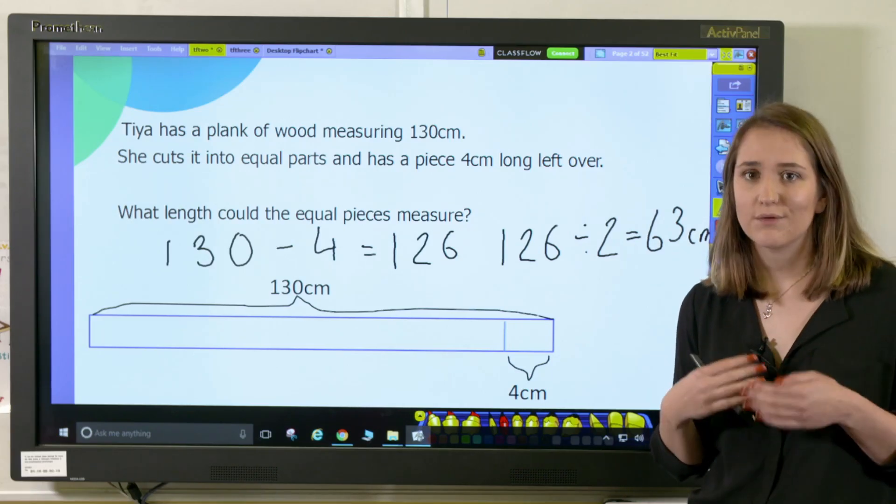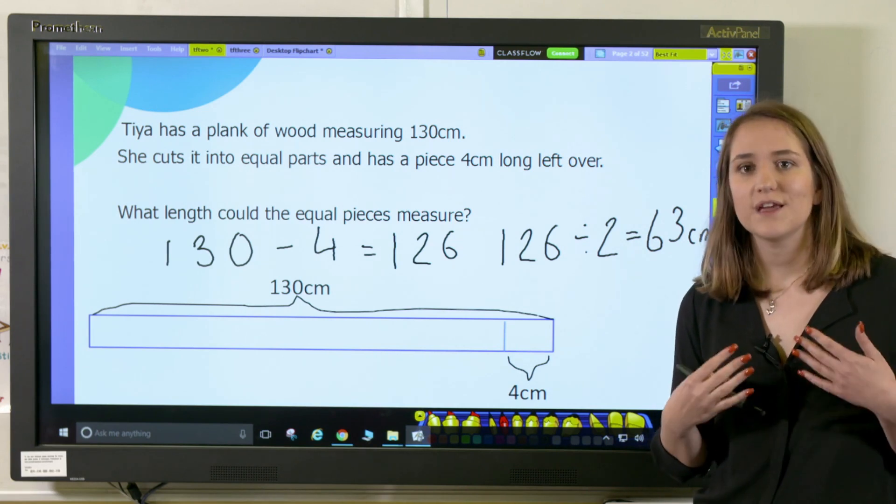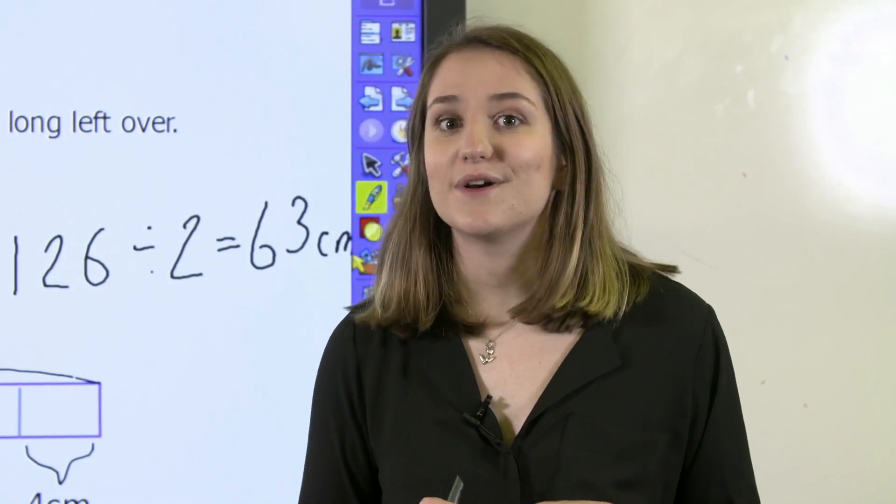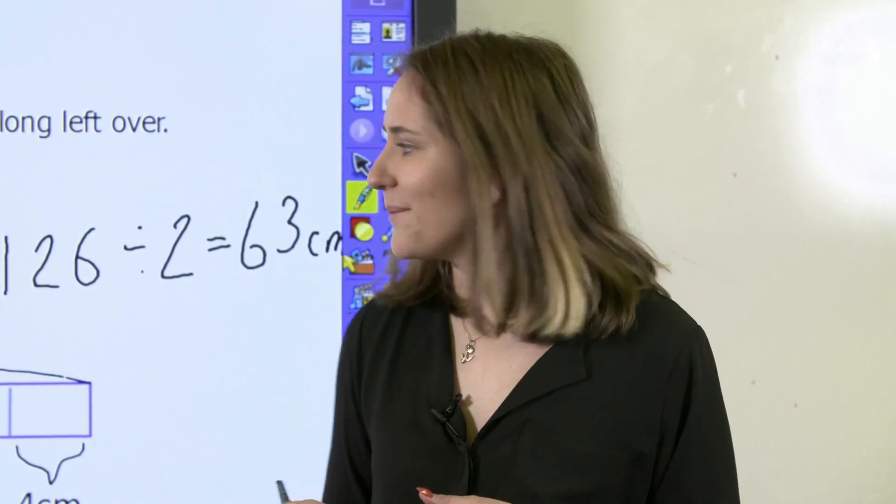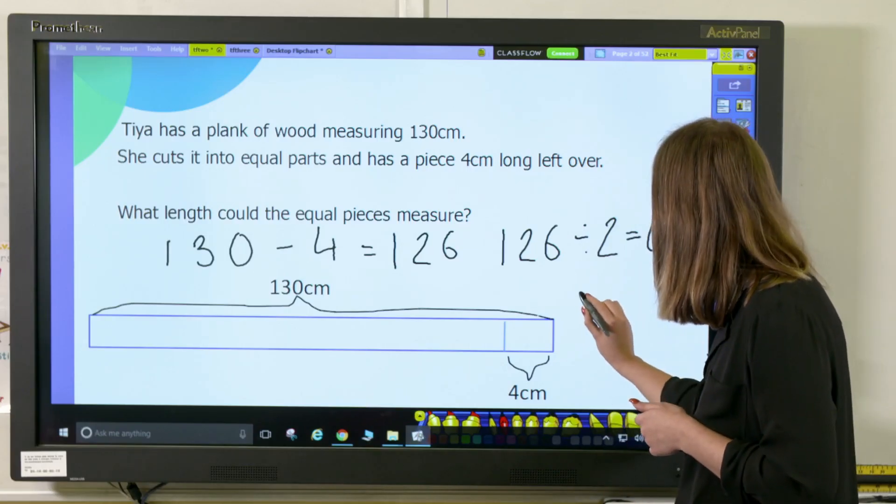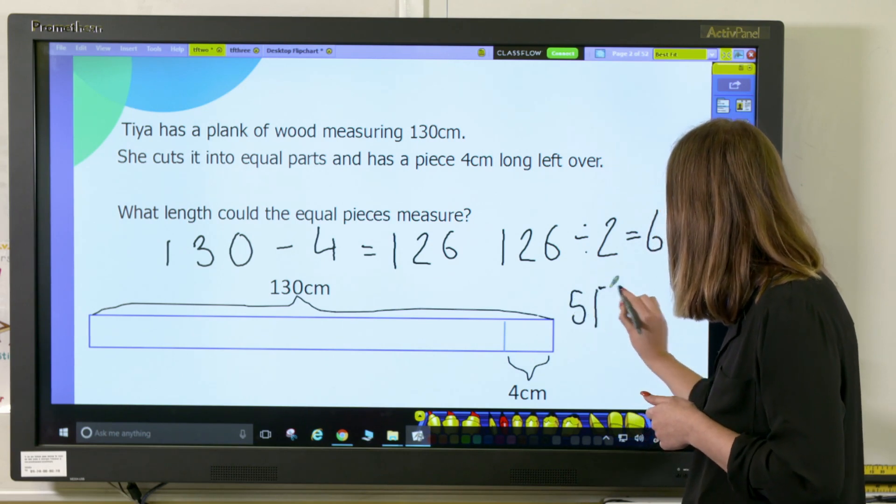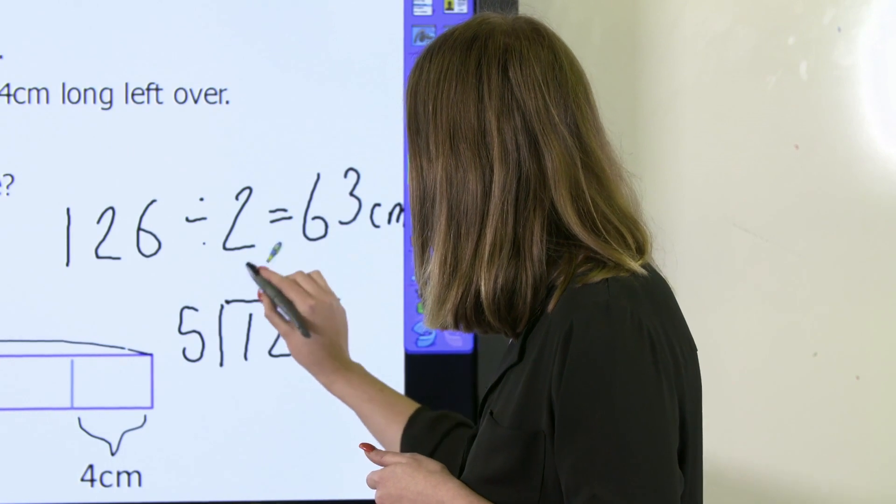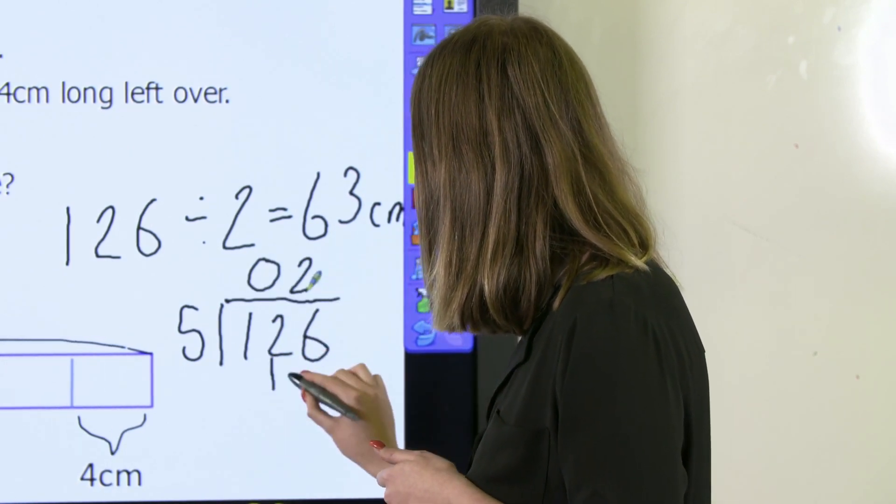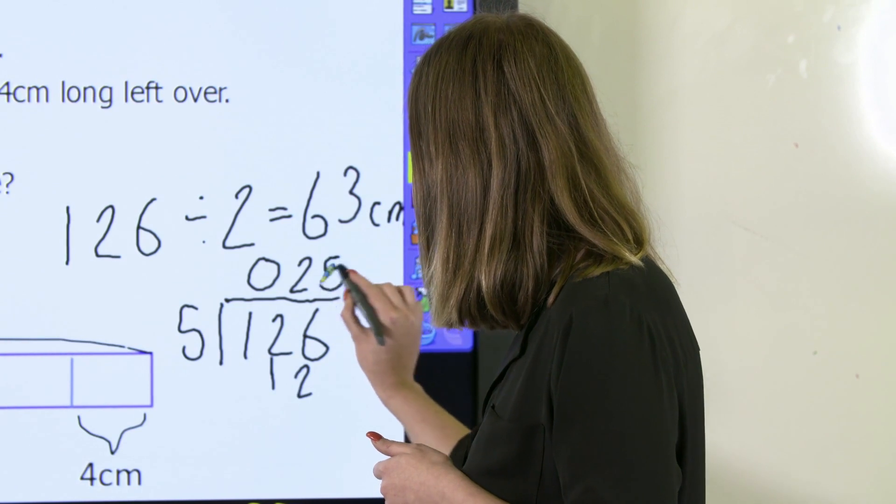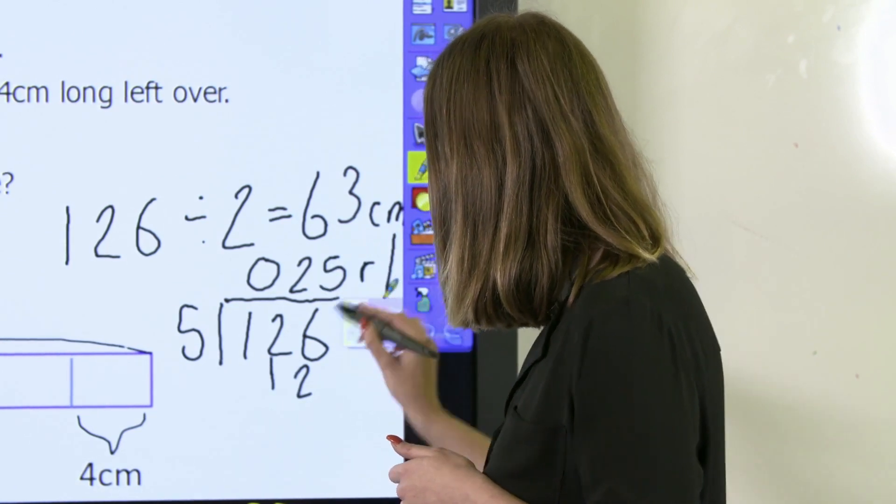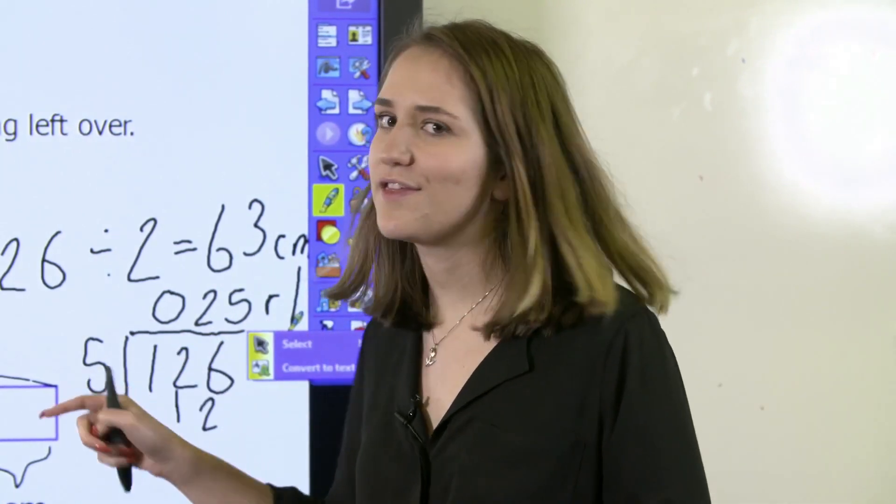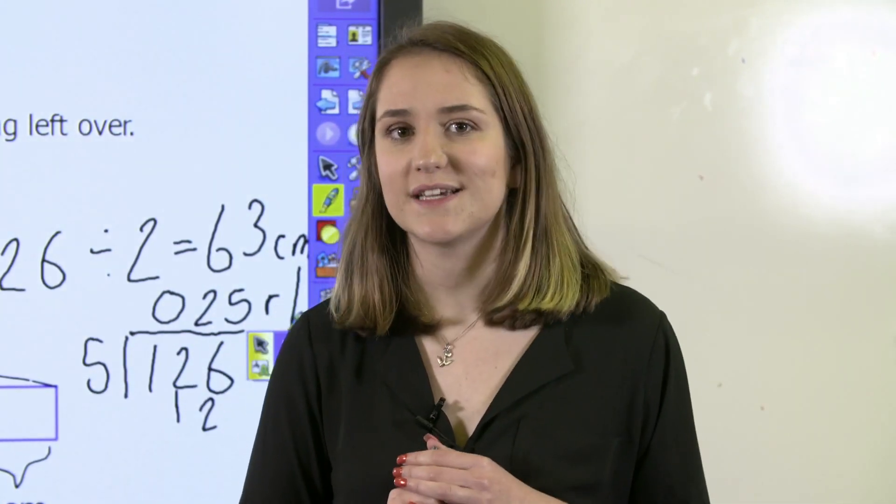Pupils can then keep working through it like this and divide it by three and four and so on. It's interesting to see if your pupils have a go at using decimals. For example, if they decided to do 126 divided by 5, you would find that you had 25 and one-fifth, or 25.2 centimeters.